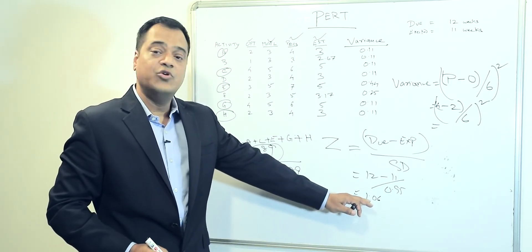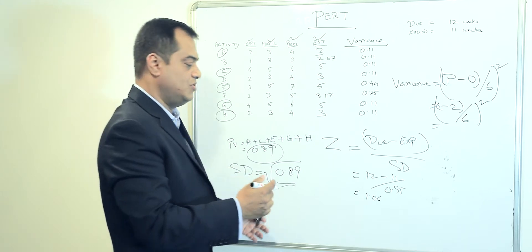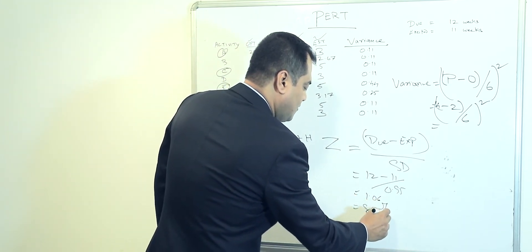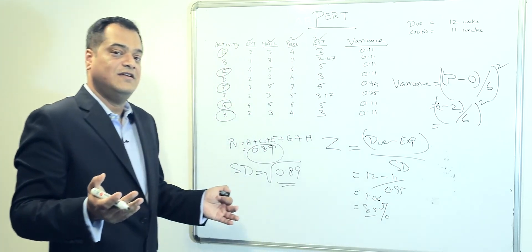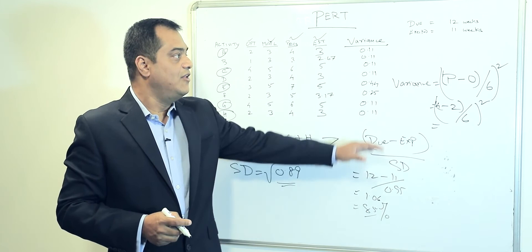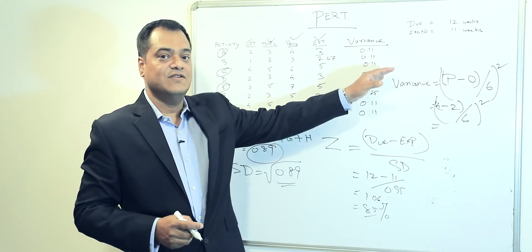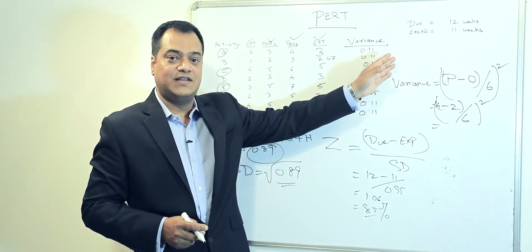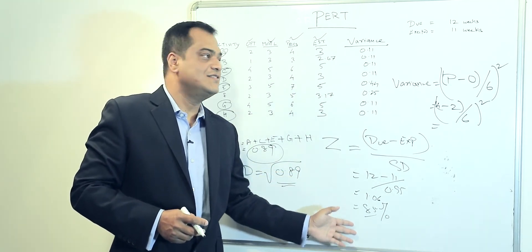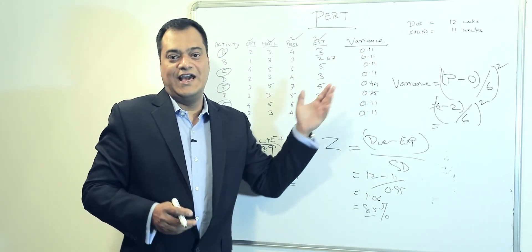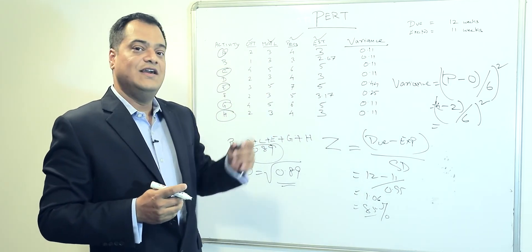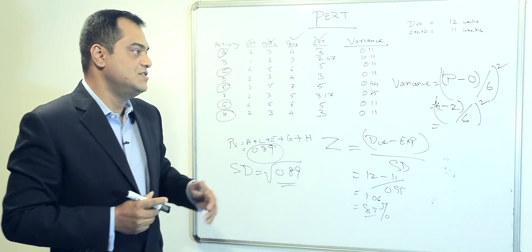Looking up 1.06 in the normal distribution table gives us 85%. This means there is an 85% chance we can deliver the project as per our expected value, and a 15% chance that we cannot deliver as per our expected value. PERT is a technique that covers this uncertainty and calculates the probability of achieving our expected outcome.